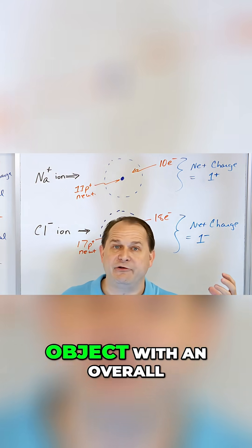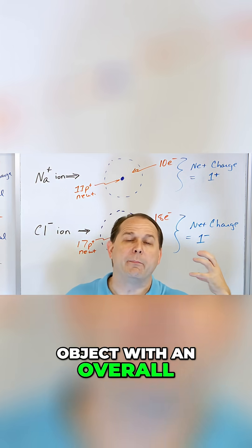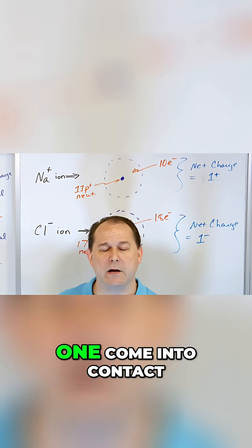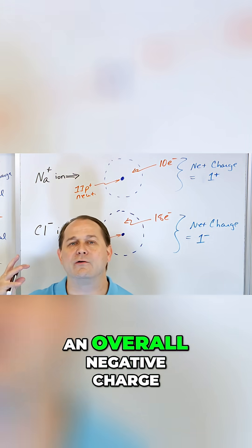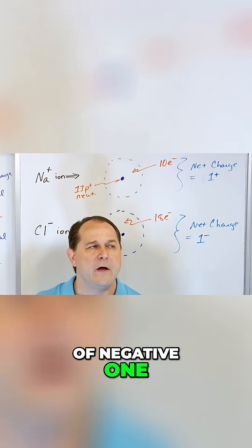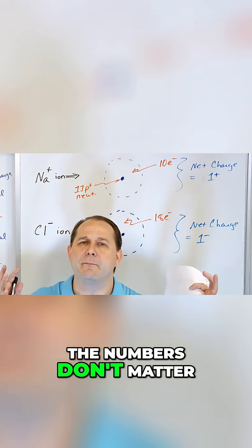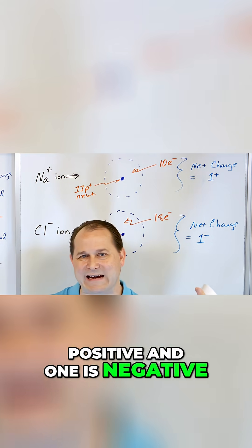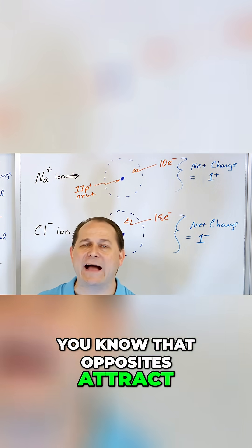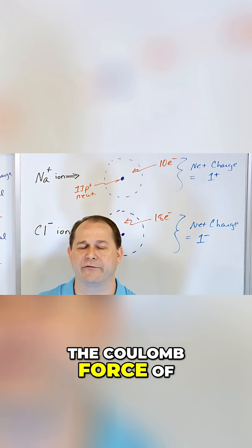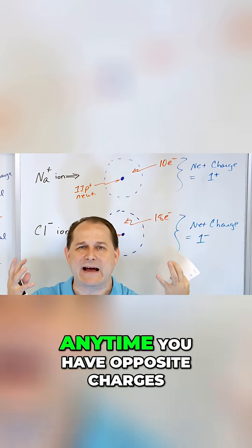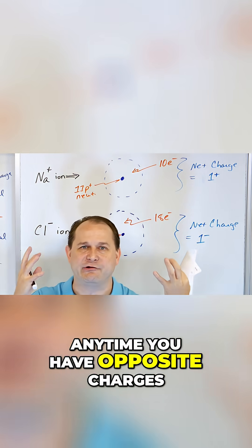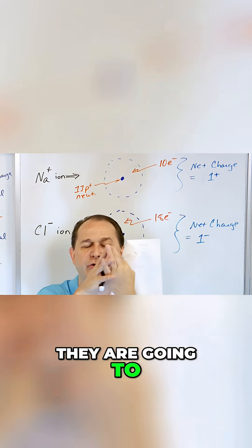What's going to happen if you have an object with an overall positive charge of positive one come into contact with another object with an overall negative charge of negative one? The numbers don't matter, but if one is positive and one is negative, you know that opposites attract. The Coulomb force, or the electric force, is millions of times stronger than gravity. Anytime you have opposite charges, they are going to attract and come together and stay together.